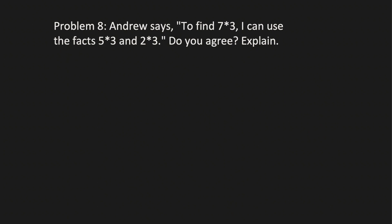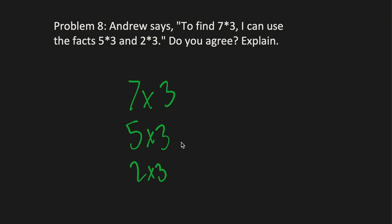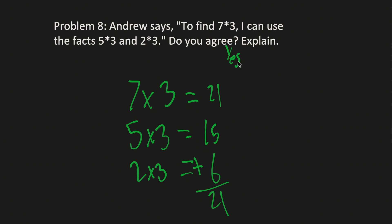Moving on to Problem 8. Andrew says to find 7 times 3, he can use the facts 5 times 3 and 2 times 3. Do you agree? Let's check: 5 times 3 is 15, and 2 times 3 is 6. 15 plus 6 is 21, which equals 7 times 3. He is right — I agree. Because if you add 5 times 3 and 2 times 3 together, you get 7 times 3.